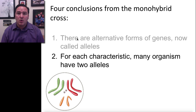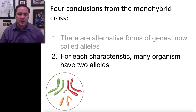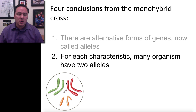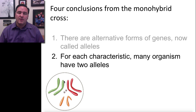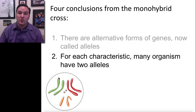The second conclusion we're going to talk about is that for each characteristic, many organisms have two alleles. Now, this is not true for all organisms, but the reason we're going to talk about it is that most organisms having two alleles makes sense. Because when you look at the chromosomes on the inside of the cell, here we've organized, for example, the chromosomes from a fruit fly.